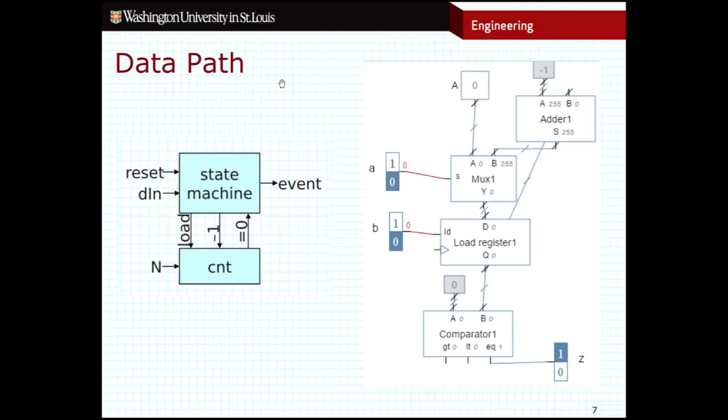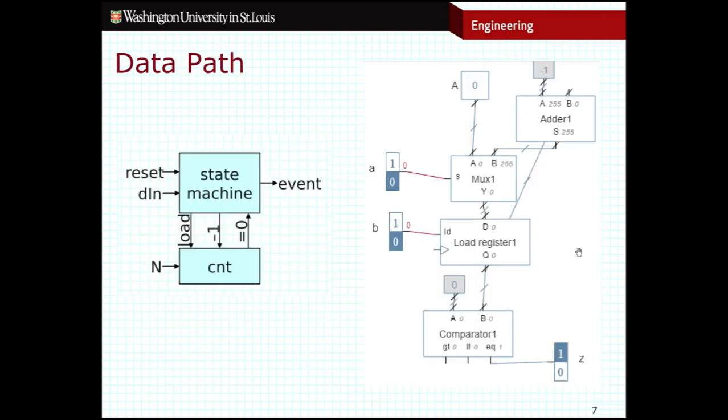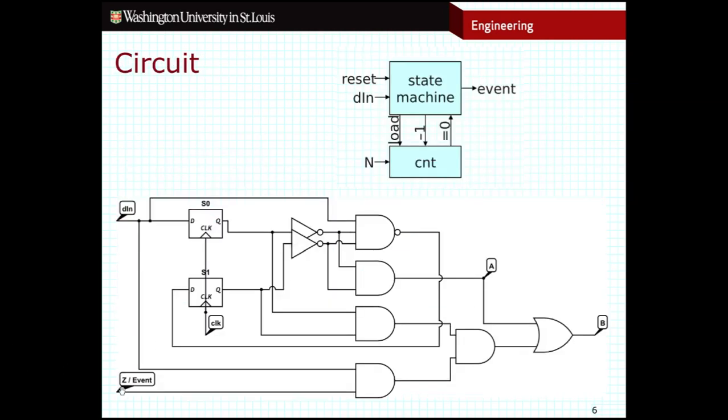It would then need to be connected to, of course, the data path in order to form the complete circuit. So the outputs A and B that we see here would need to be connected to A and B here. And the output of the data path, Z here, would need to be connected to the inputs of this finite state machine, Z here, in order to form the complete circuit for this high-level state machine.